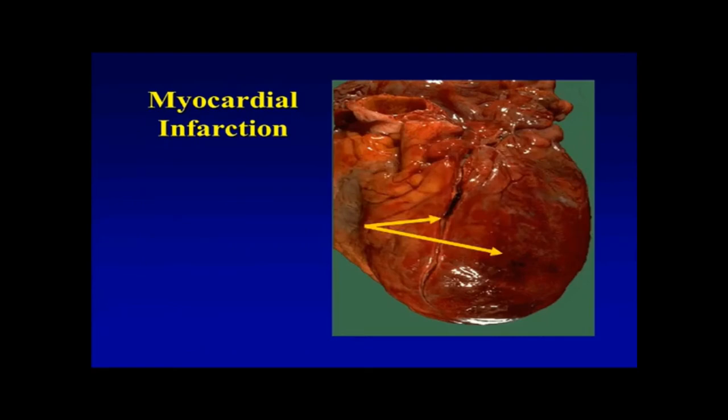At the organ level, the left anterior descending artery comes down here. This is the left ventricle, the main pumping chamber, and you can see there's evidence of a thrombus, and the discoloration of the myocardium indicates that it was ischemic.